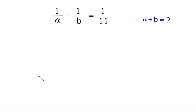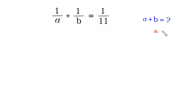Hello, welcome to how to solve this very nice equation. 1 over A plus 1 over B is equal to 1 over 11. We need to find all possible values of A plus B, where A is greater than 0 and B is greater than 0.